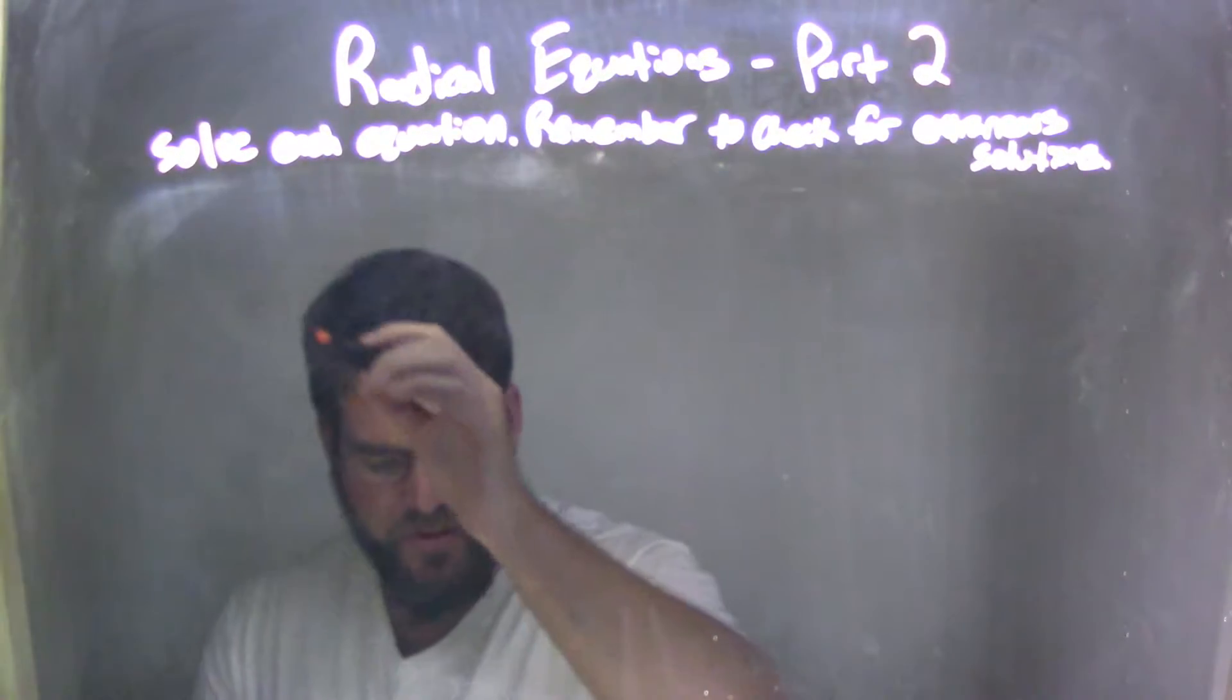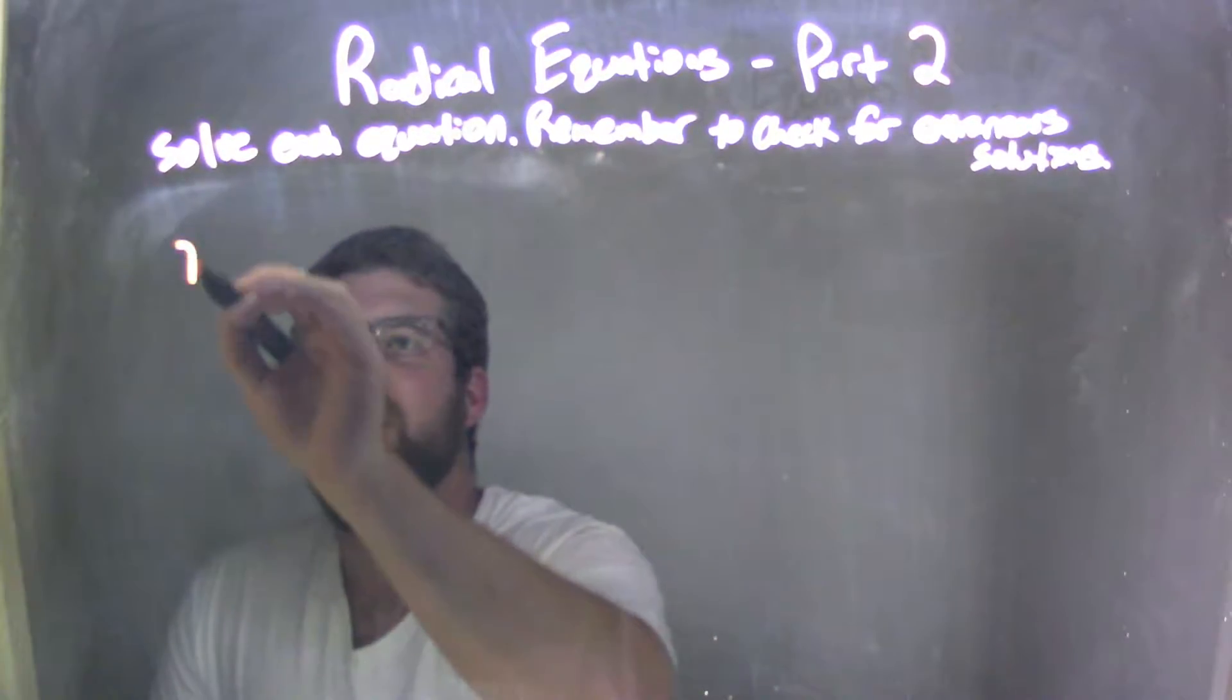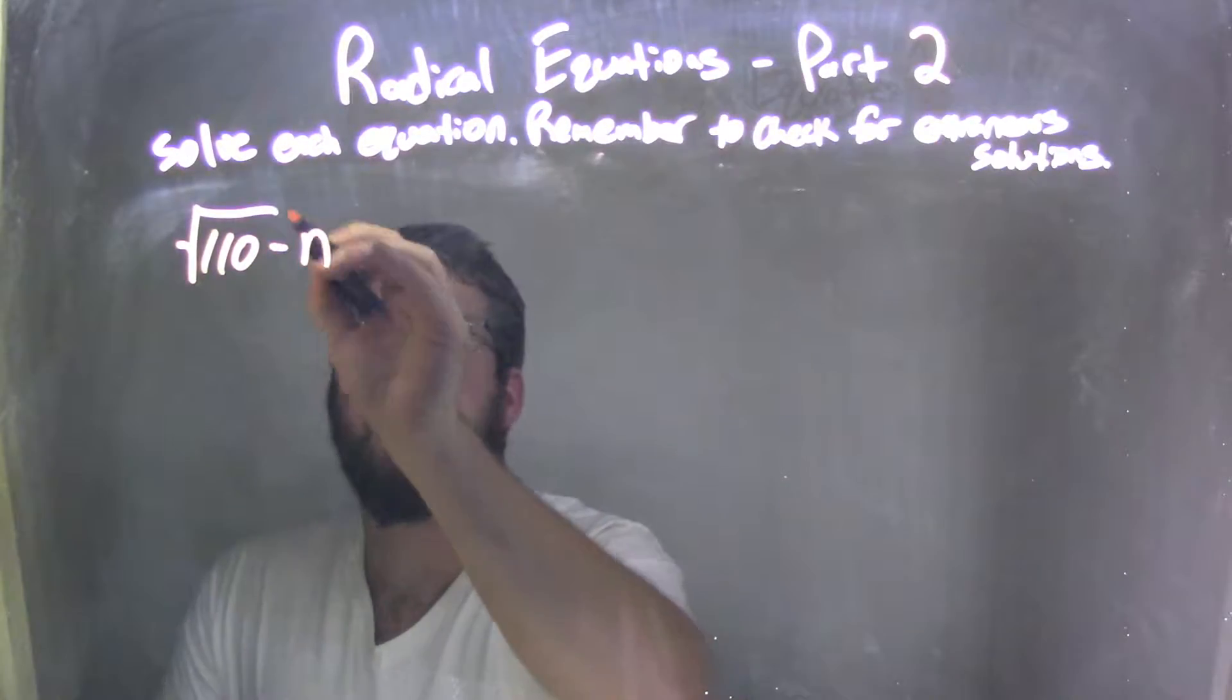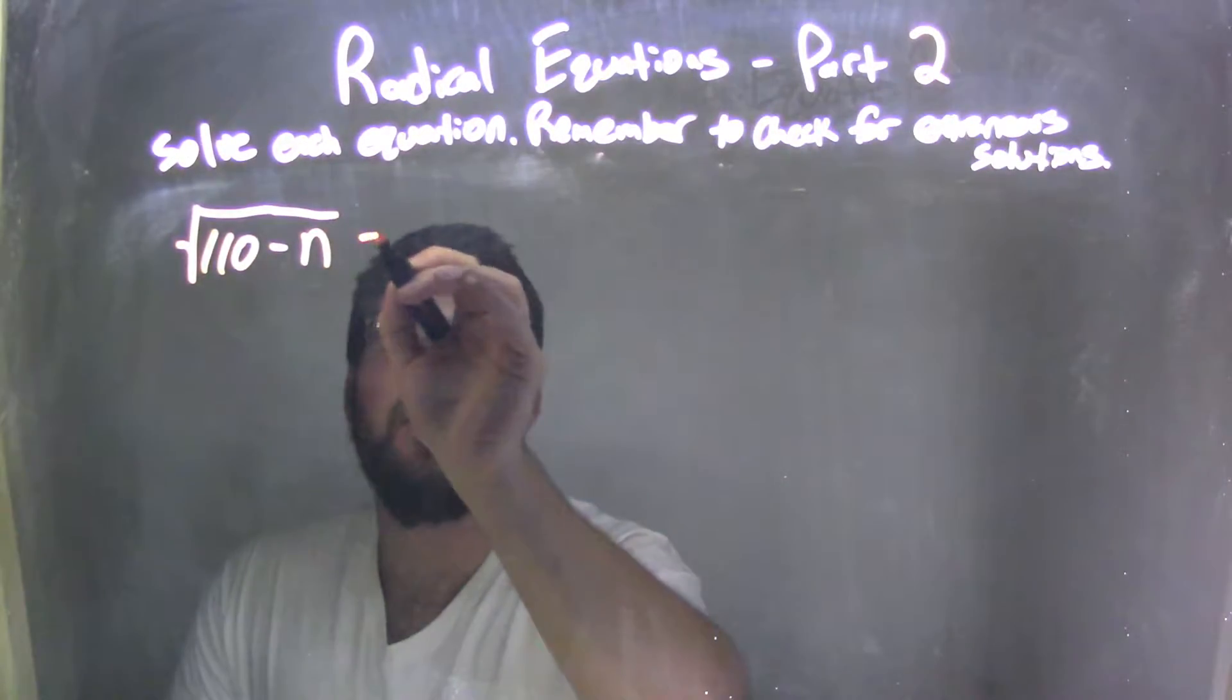So if I was given this equation, the square root of 1/10 minus n, square root goes over all of it, equals n.